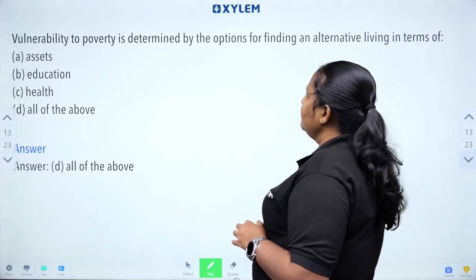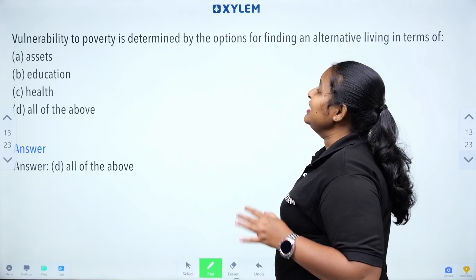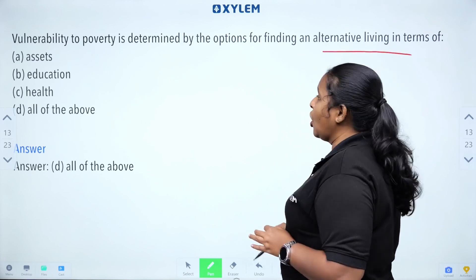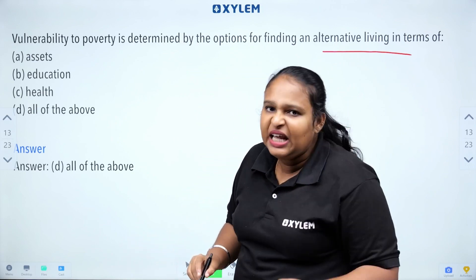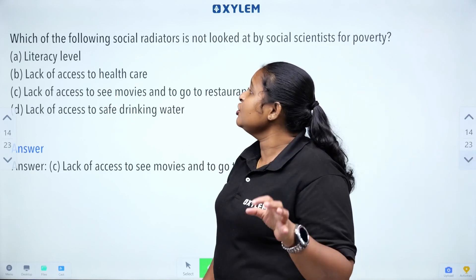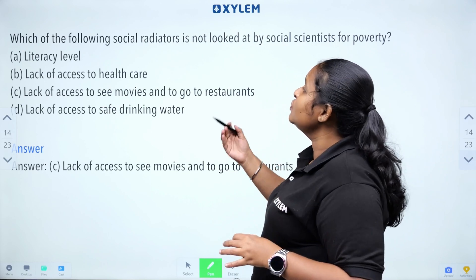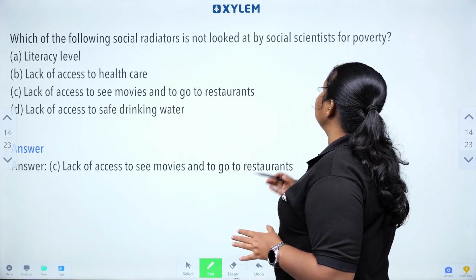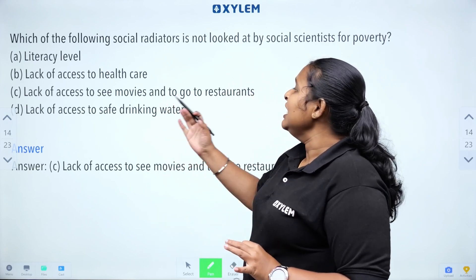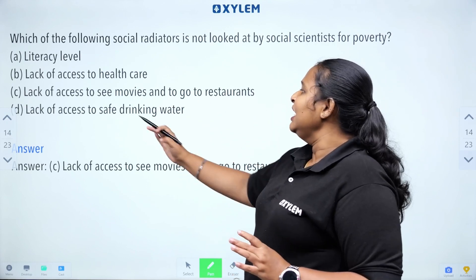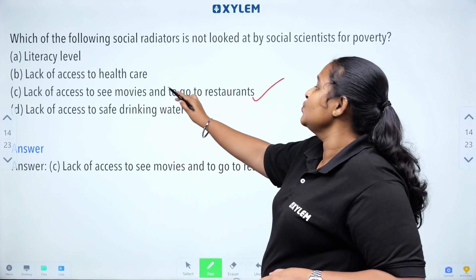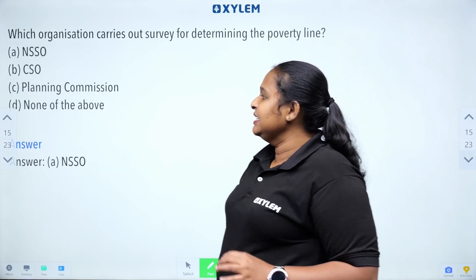Vulnerability to poverty is determined by the options for finding an alternative living in terms of education and health. Which of the following social indicators is not looked at by social scientists for poverty? Lack of access to healthcare, lack of access to movies and restaurants, lack of access to safe drinking water — the correct answer is lack of access to see movies and go to a restaurant.